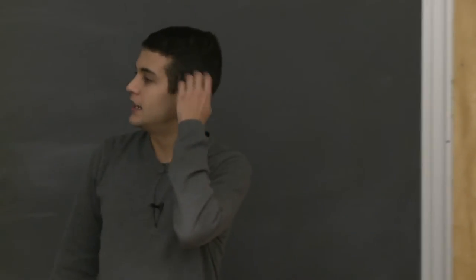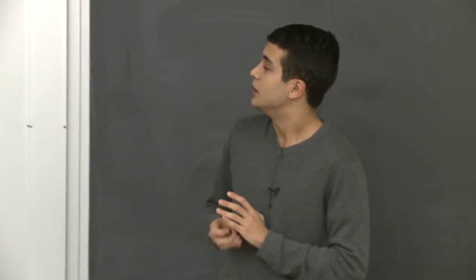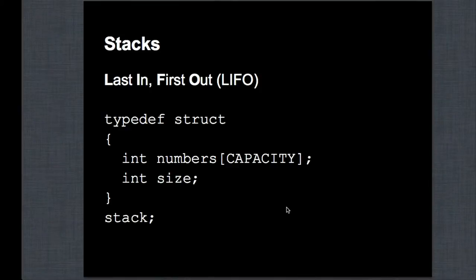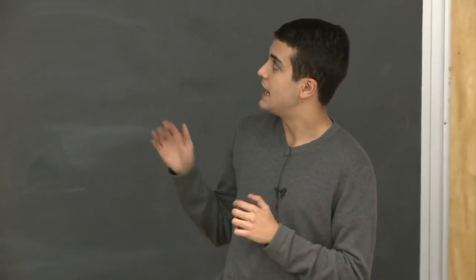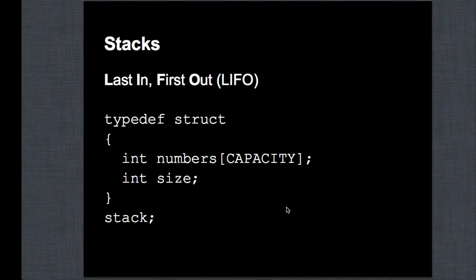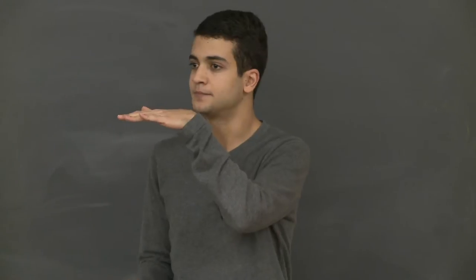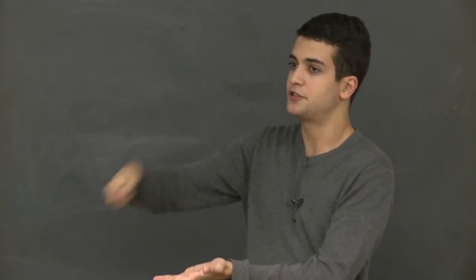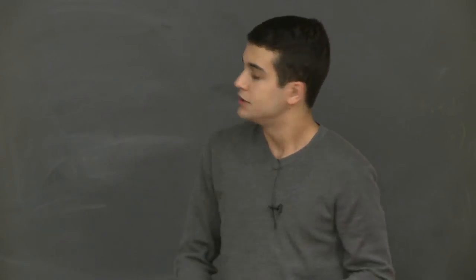Now let's talk about stacks. Stacks are pretty straightforward. We did stacks and queues in class using arrays, but you should be aware that you can also do stacks and queues using linked lists. If you have an array, a stack would have to store the current size and an array of elements. The difference between a stack and a linked list is that in the stack you only have access to the last element that was put in — it's called last in, first out. Just like a stack of trays, you have to remove the top tray first.